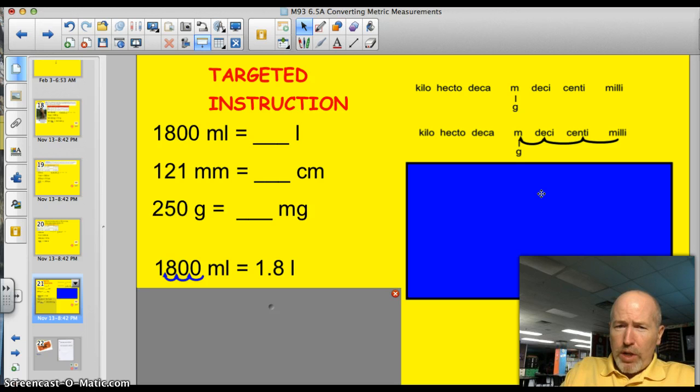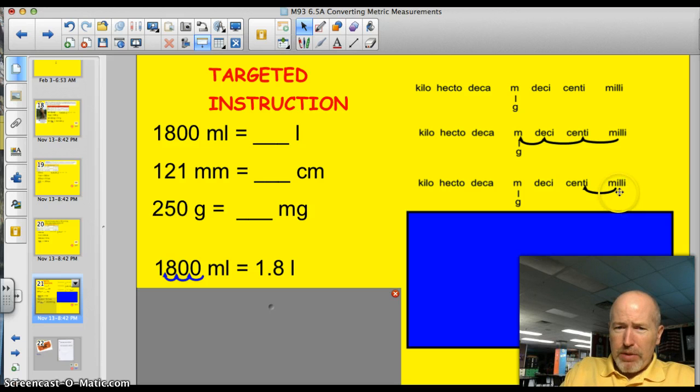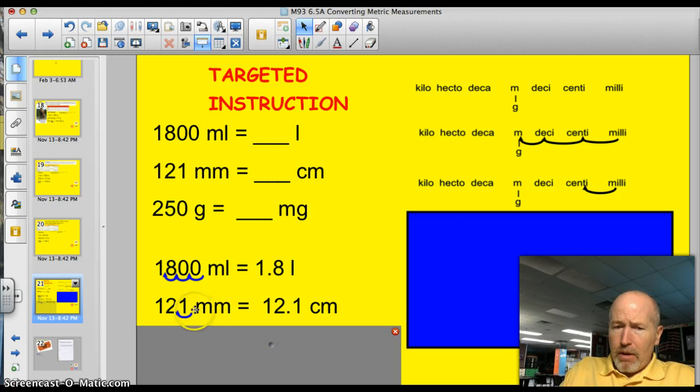The next one, 122 millimeters. So I'm here at millimeters, and I'm going to go to centimeters. Well, I'm just going to go one spot, millimeters to centimeters. I am moving to the left. So 121 millimeters becomes, move it one spot to the left, becomes 12.1 centimeters.